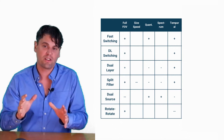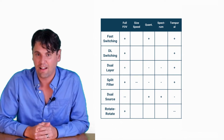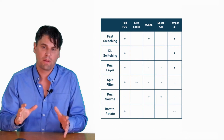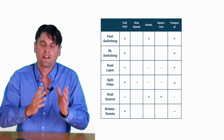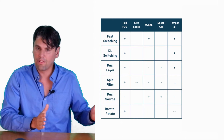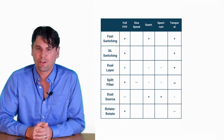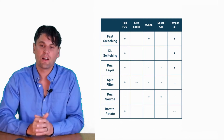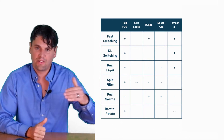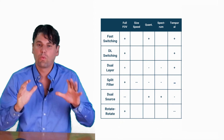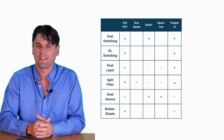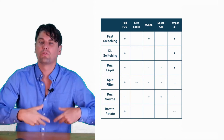Temporal registration refers to how well the two energy measurements are acquired at the same time. The dual layer detector measures both simultaneously — exactly the same time. Fast switching is only a few milliseconds apart, essentially simultaneous. The deep learning system is slightly worse over many views. The dual source system is about 90 degrees different, so not quite as good as projection-based systems. The worst is the rotate-rotate system, where it could take several seconds between scans, allowing significant patient motion.